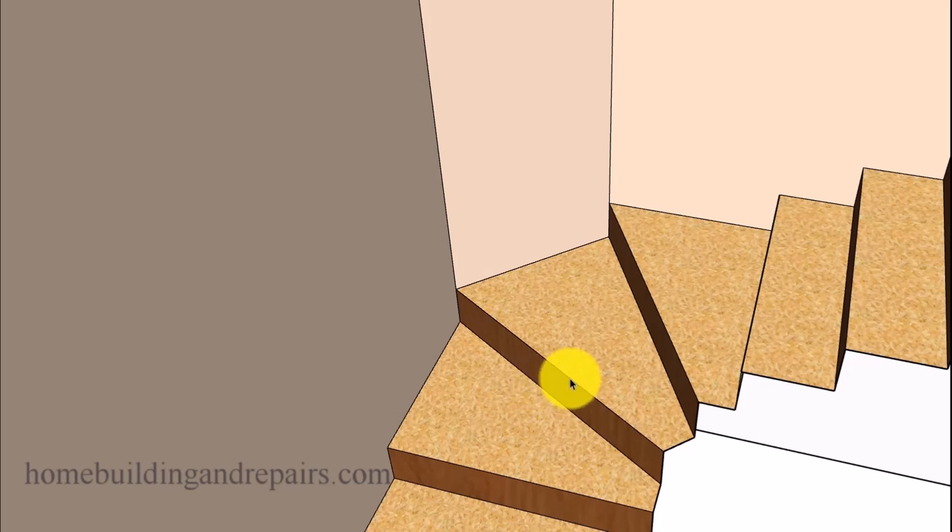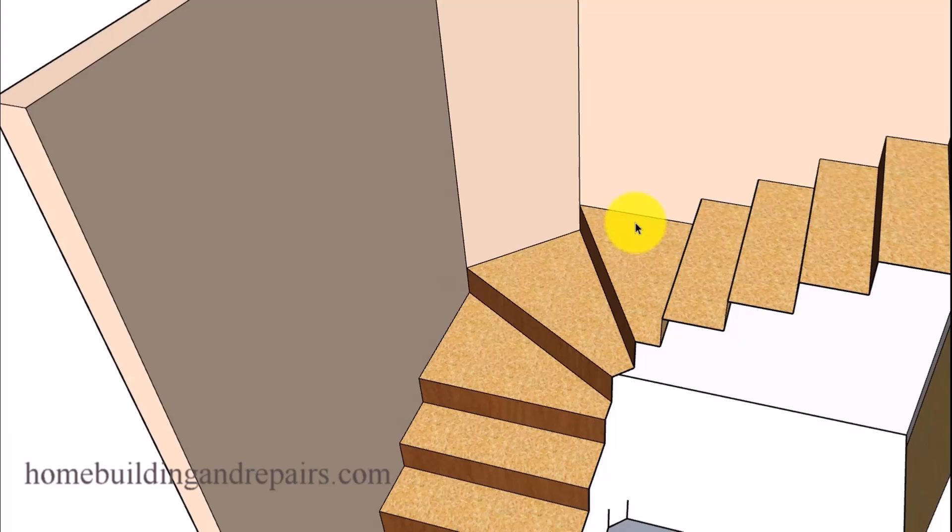Some, you know, one by fours, one by six, one by eights for the risers and then put a nosing on it and add materials. And then pretty soon they're, you know, two inches away from this corner and the stairway doesn't look as nice.